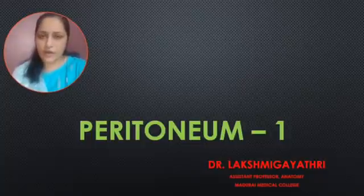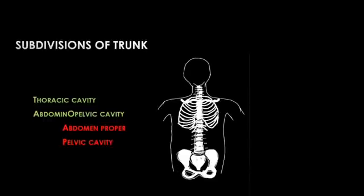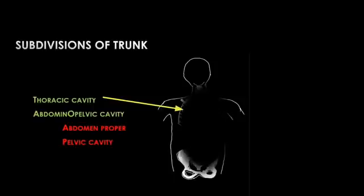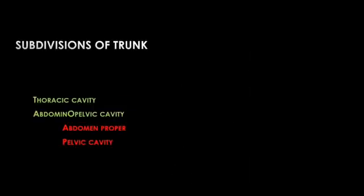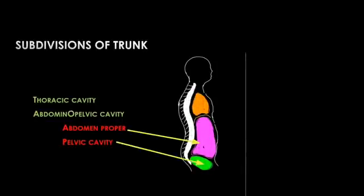In this video and upcoming videos we will be seeing in detail about the gross anatomy of the peritoneum. First, let us talk about the subdivisions of the trunk. The trunk of the human body is divided into an upper thoracic cavity and the lower abdominal pelvic cavity, divided by the intervening diaphragm. The abdominal pelvic cavity is again divided into two parts: an upper part called the abdominal proper and the lower part called the pelvic cavity, divided by the plane of the pelvic inlet.